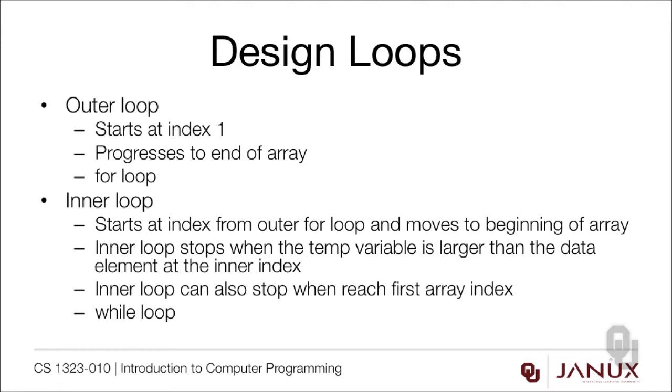The inner loop starts at the index from the outer loop and moves to the beginning of the array, not to the end. Notice the inner loop stops when the temp variable is larger than the data, or it can stop when we reach the first array index. With all these different conditions, it's probably easier to use a while loop than a for loop, although it can be done successfully either way. I'm going to show it with a while loop.